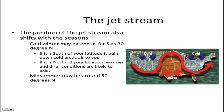The position of the jet stream is really important, especially for us here in Minnesota. The position changes with the seasons. If the jet stream is located south of Minnesota, it's going to pull down very cold Arctic air from Canada, creating air temperatures that are lower than normal. So in this example, these areas would be experiencing colder than normal conditions.